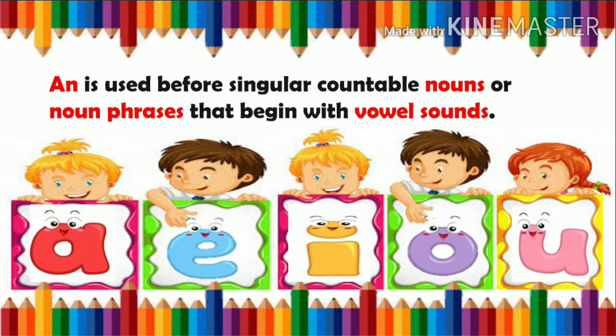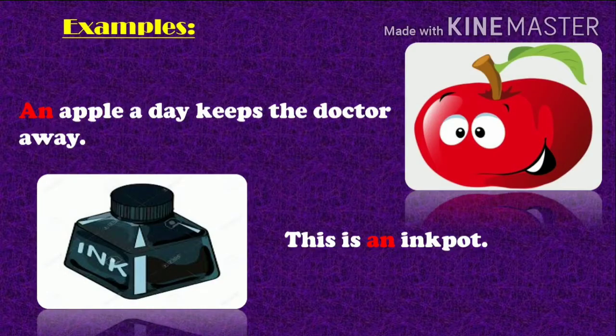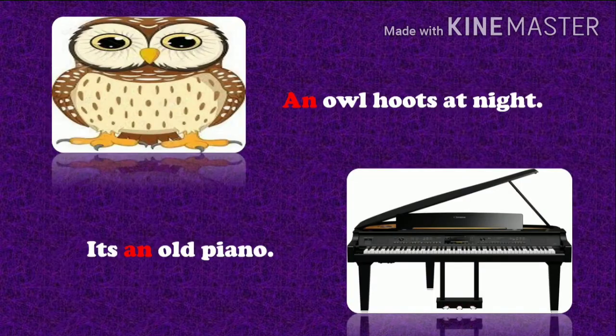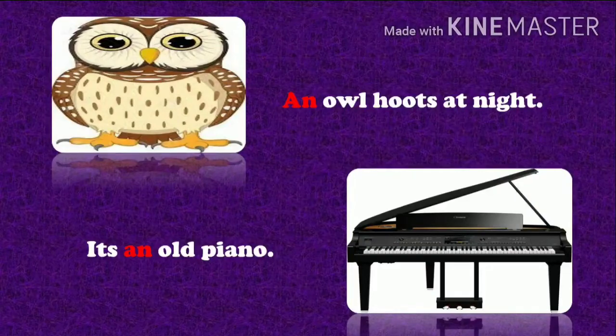Now let us read few examples with the article AN. An apple a day keeps the doctor away. This is an inkpot. An owl hoots at night. It's an old piano.